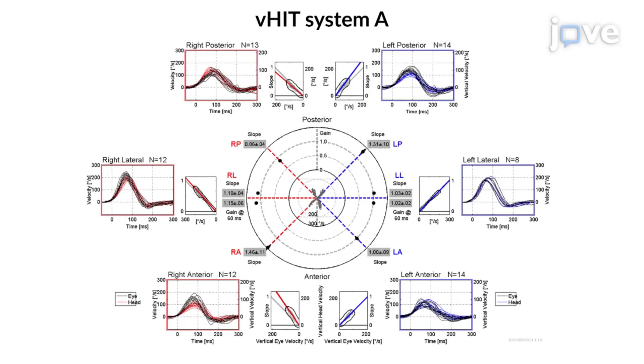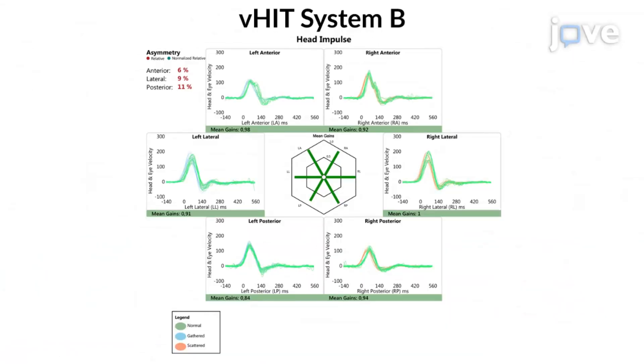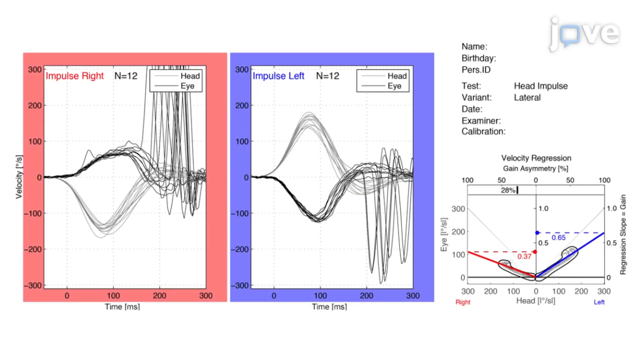Normal findings were also shown for all 6 SCCs following VHIT system A testing and VHIT system B testing. In order to conclude that the vestibular function is reduced, a low mean gain value and pathological saccades must be present.